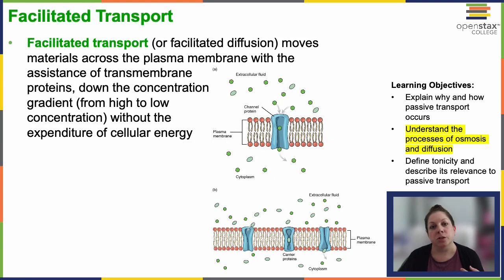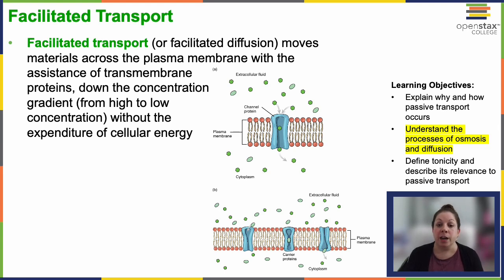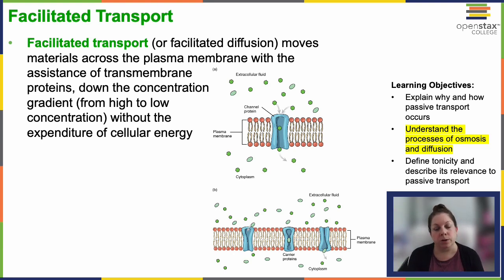Sometimes just diffusing across the membrane isn't possible depending on the molecule — maybe it's too charged, maybe it's too big. In that case, we have something called facilitated transport. This is still passive transport; it doesn't require any energy. But it requires a channel — some way to assist the molecule across the membrane. We can also call it facilitated diffusion. It follows the same rules: moving down the concentration gradient from high concentration to low concentration, with no energy spent.